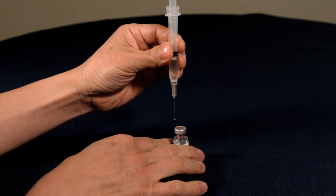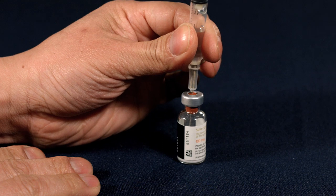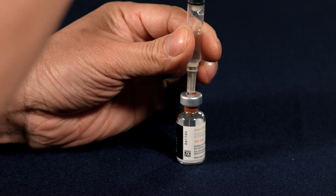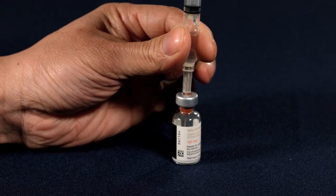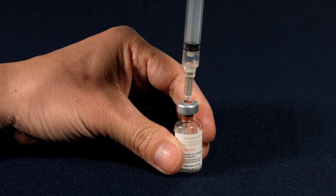Insert the needle into the Solucortef bottle. Slowly depress the plunger to release all the water and leave an air gap inside the syringe.